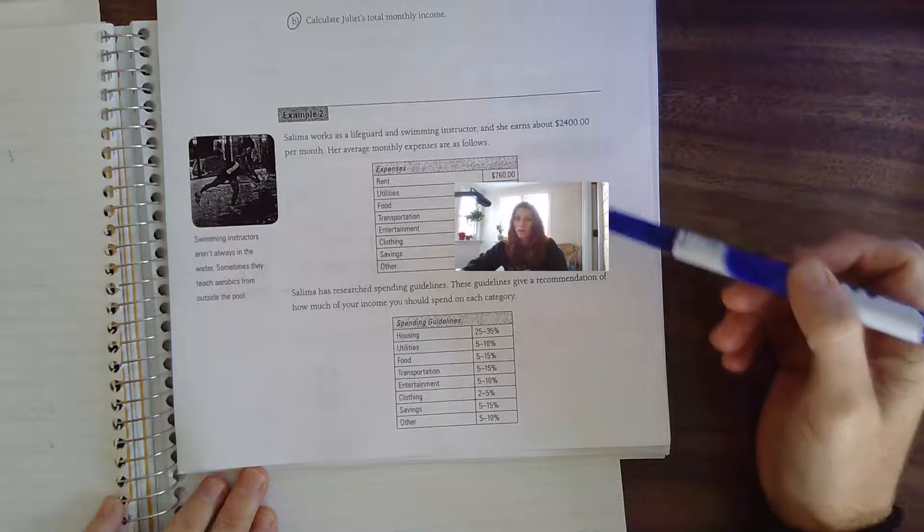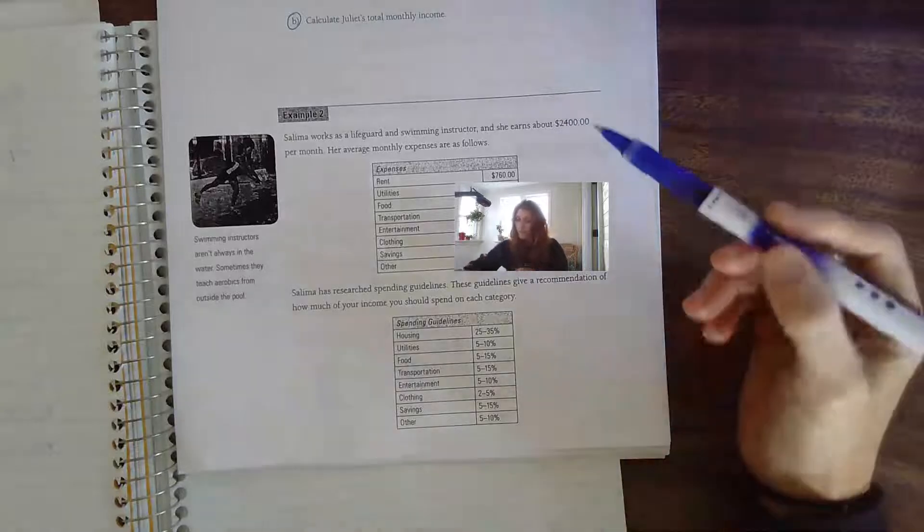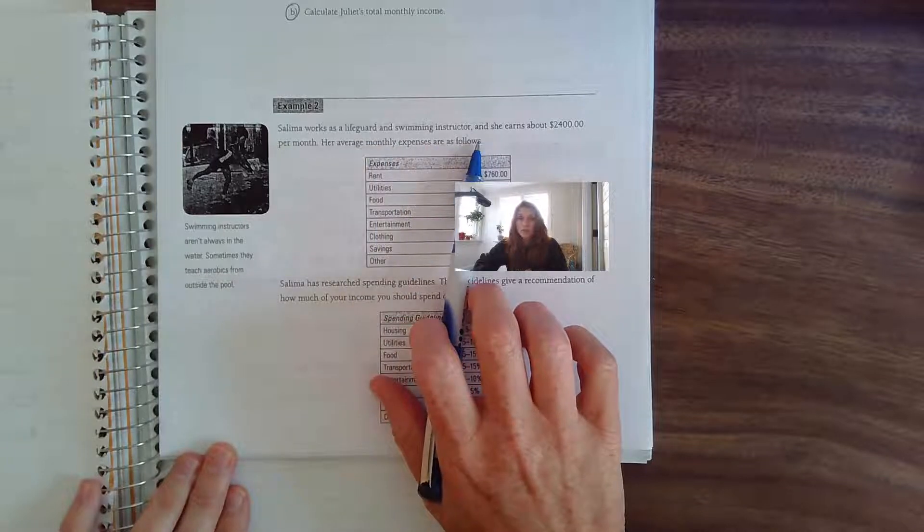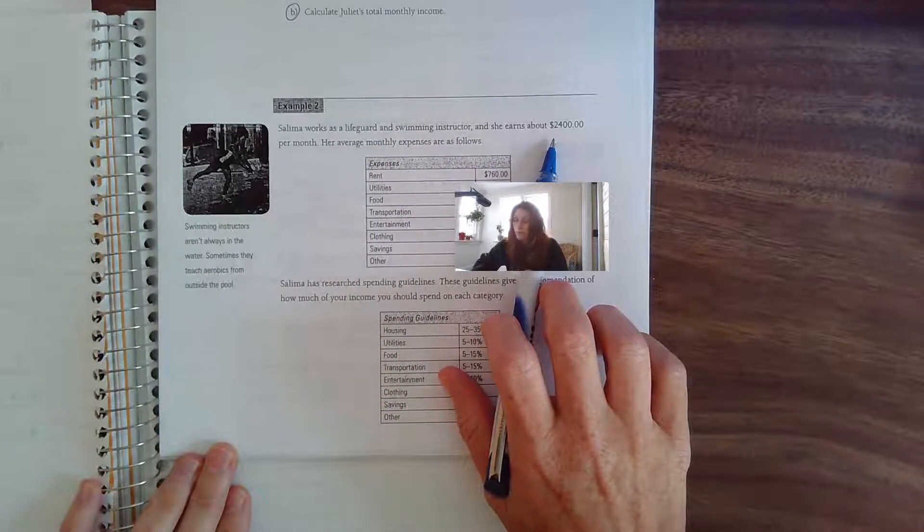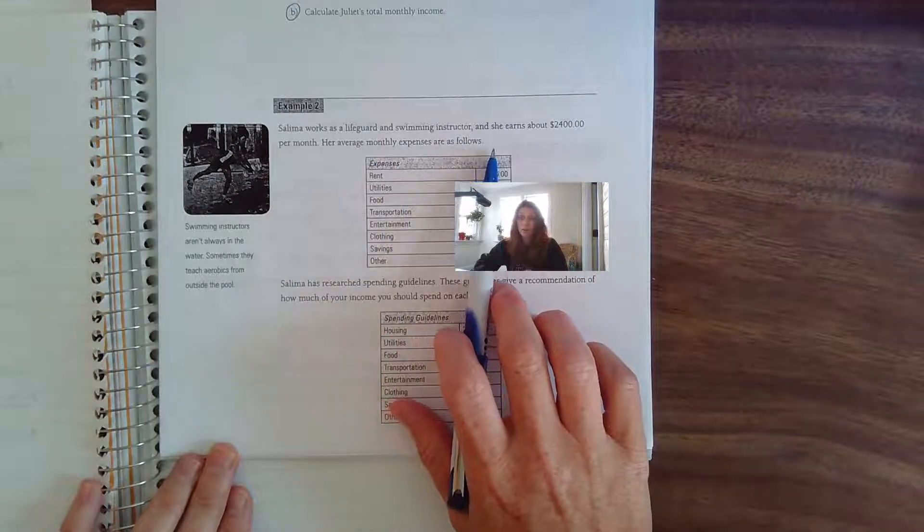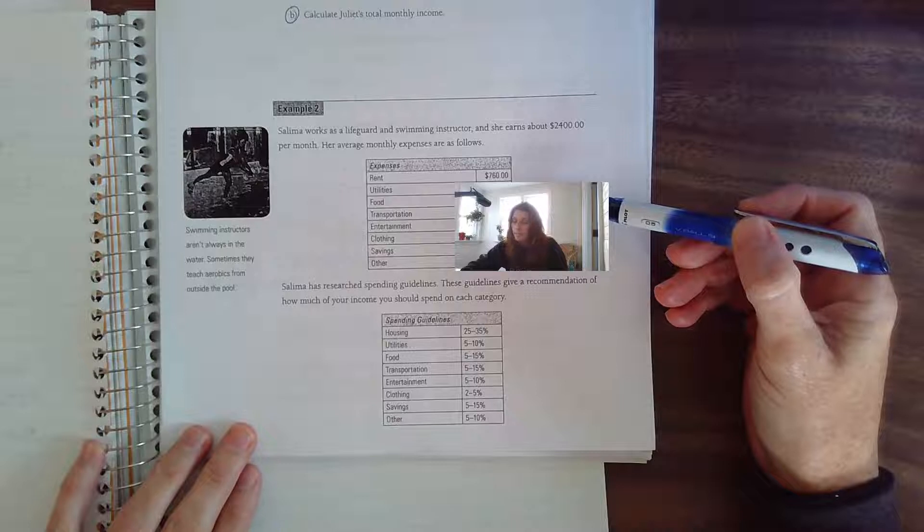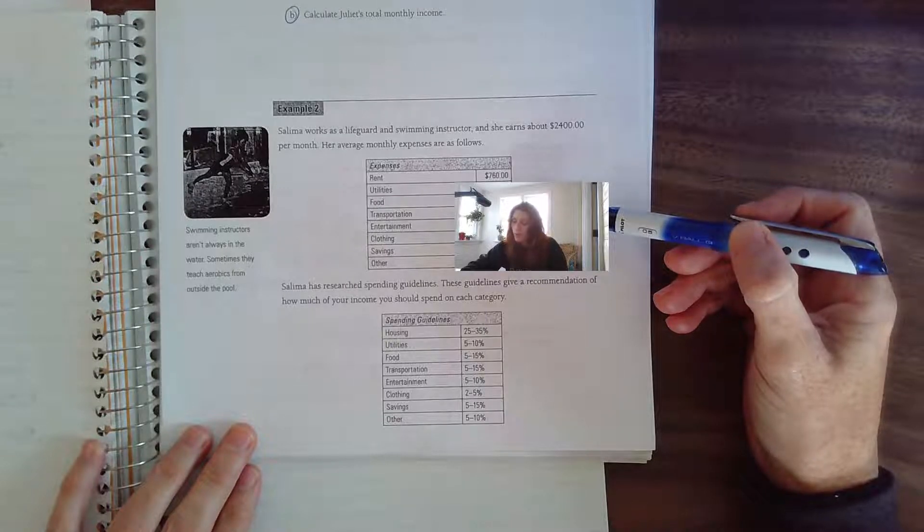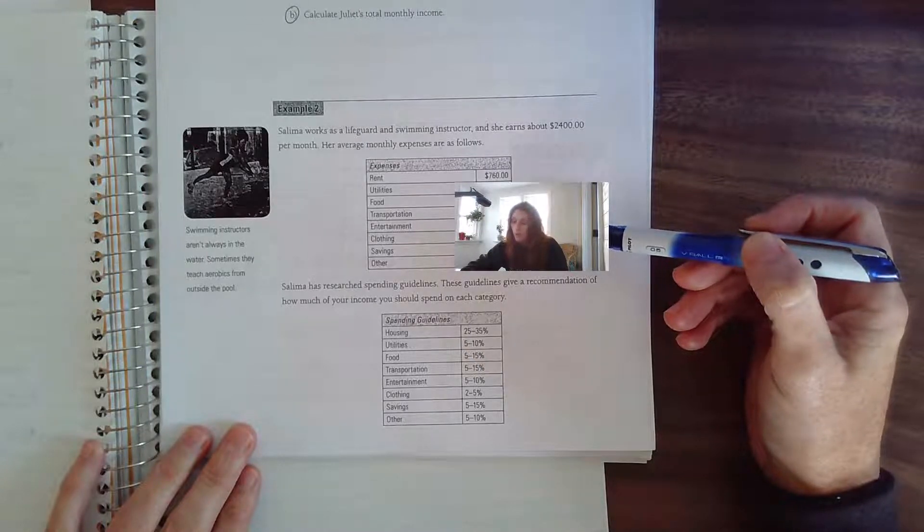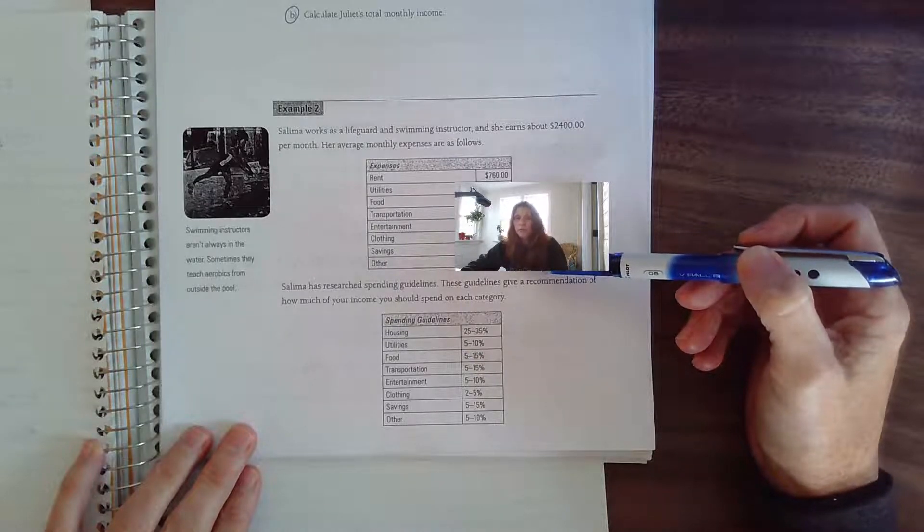This example is really focusing on the amounts of money that are spent and what percentage they are of your whole income. Salima works as a lifeguard and swimming instructor. She earns about $2,400 per month. Her average monthly expenses are as follows: $760 for rent, utilities $140, food $400, transportation $175, entertainment $200, clothing $200, savings $180, other $345.